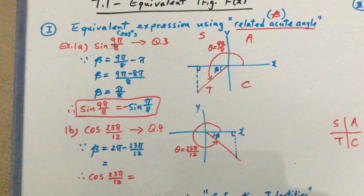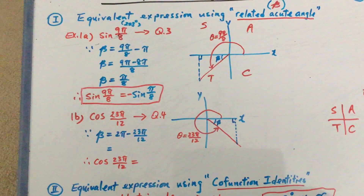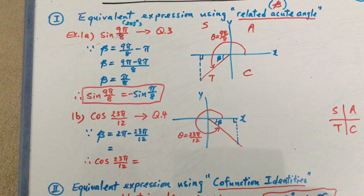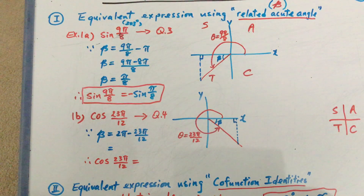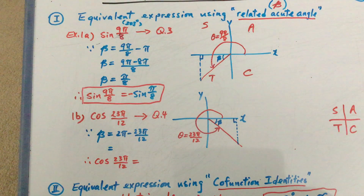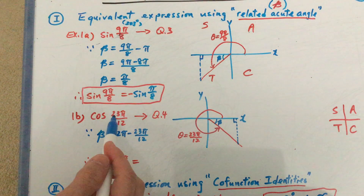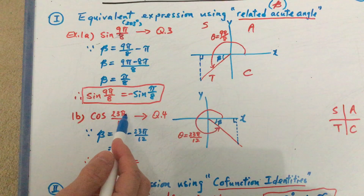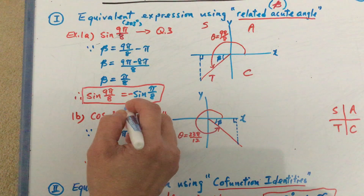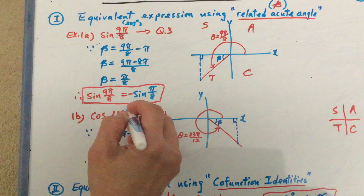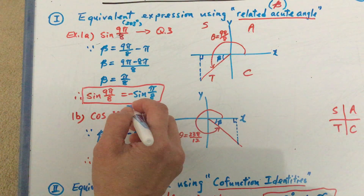Let me do one more example. Example 1b: if you have a cosine of 23π over 12 — how big is this angle? Well, if I take 23 times 180 divided by 12, you see that this is going to be approximately equal to 345 degrees.